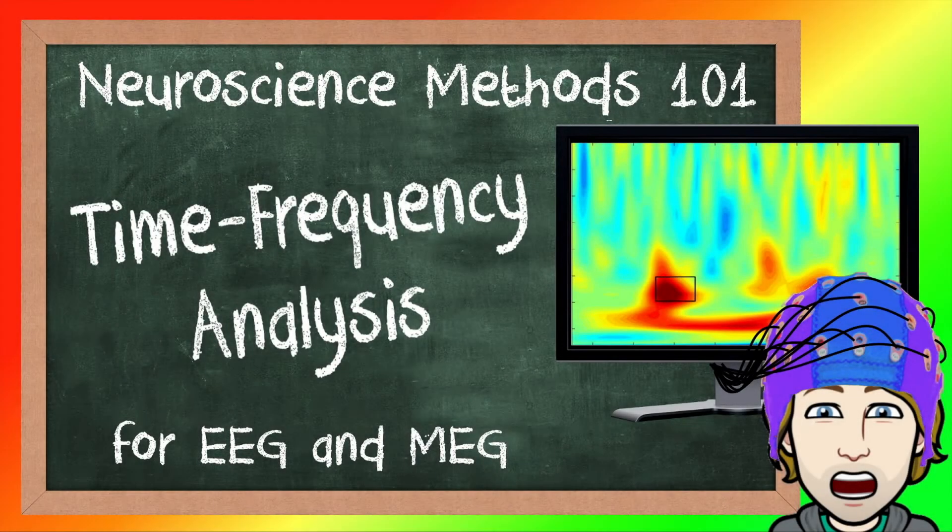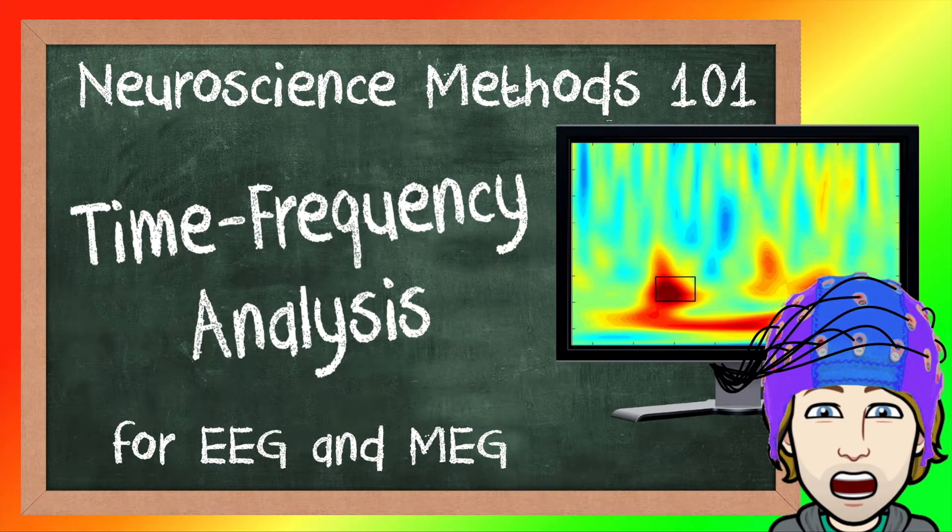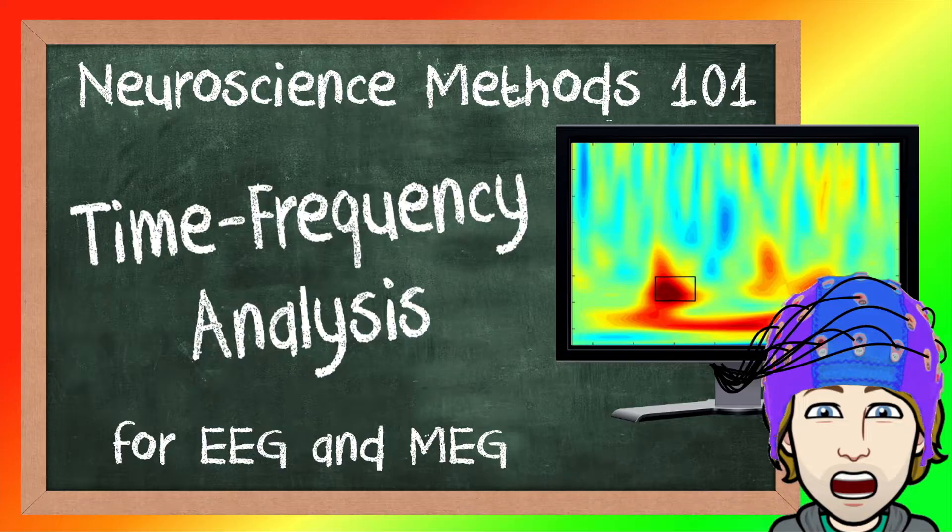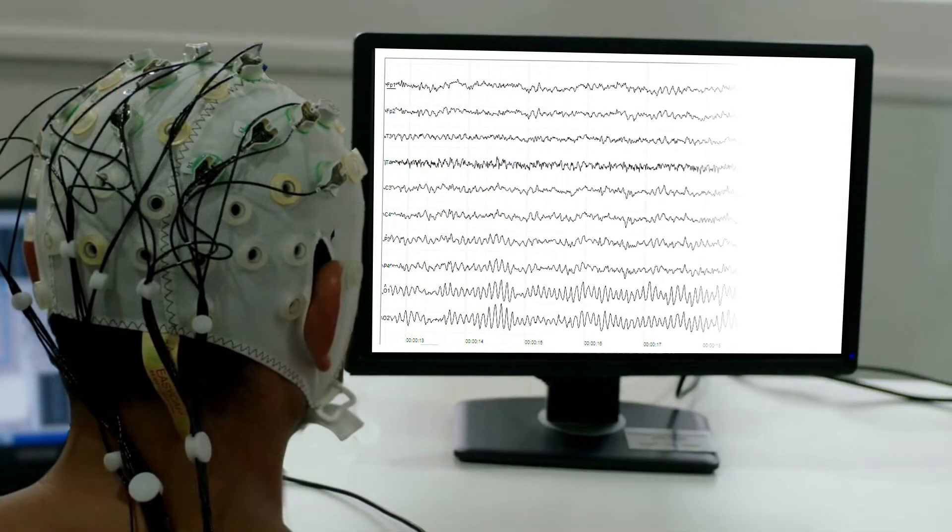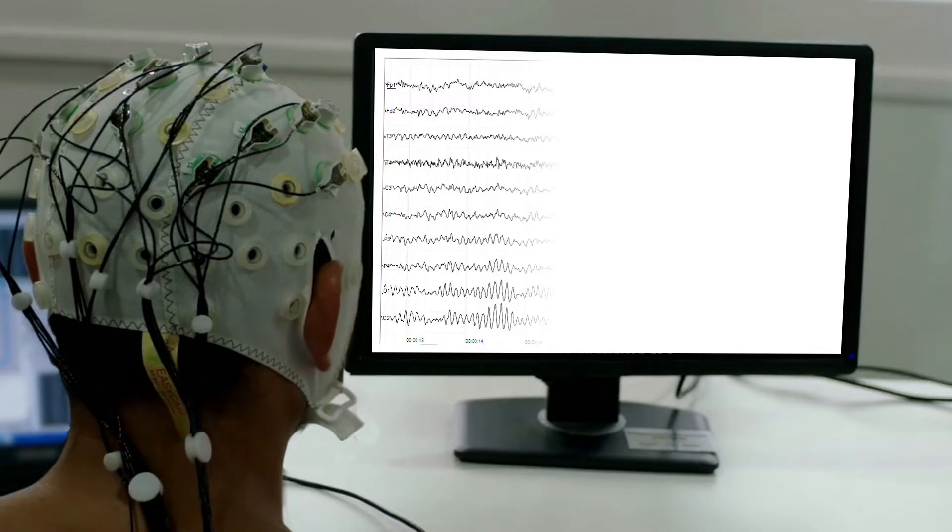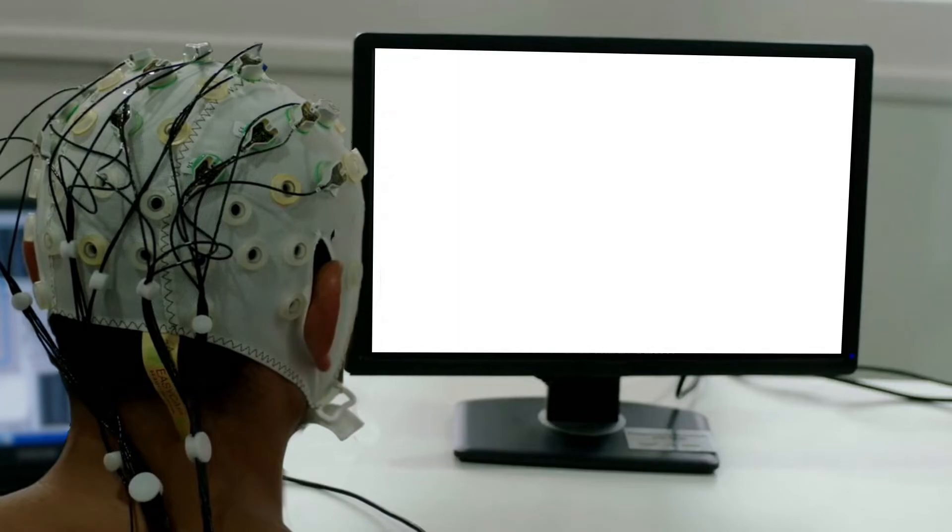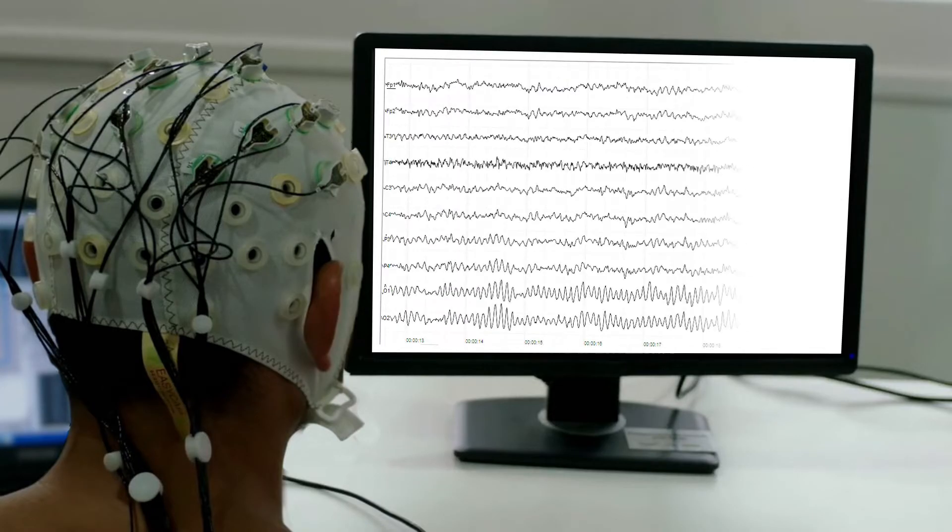Hello everyone and welcome back to Neuroscience Methods 101. Today we are going to talk about time frequency analyses for EEG or MEG. When using EEG or MEG, we can pick up wavy signals from the scalp. These signals reflect rhythmic activity of neurons in the brain.